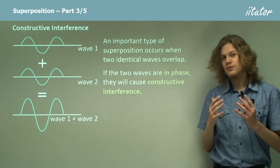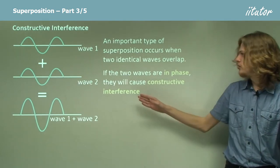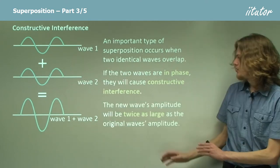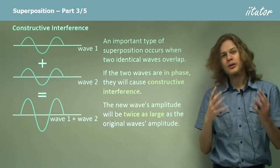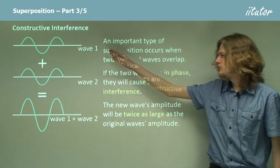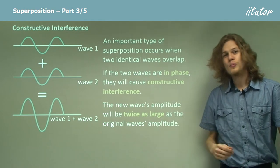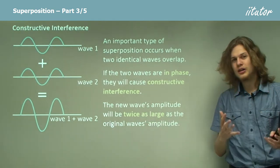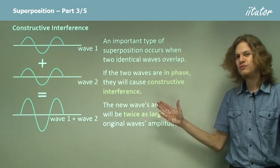We get constructive interference when two waves match up exactly so they're in phase. So the new wave's amplitude will be much bigger than either of the original wave's amplitude. So it means that we're creating a new wave that is much bigger, hence constructive interference.